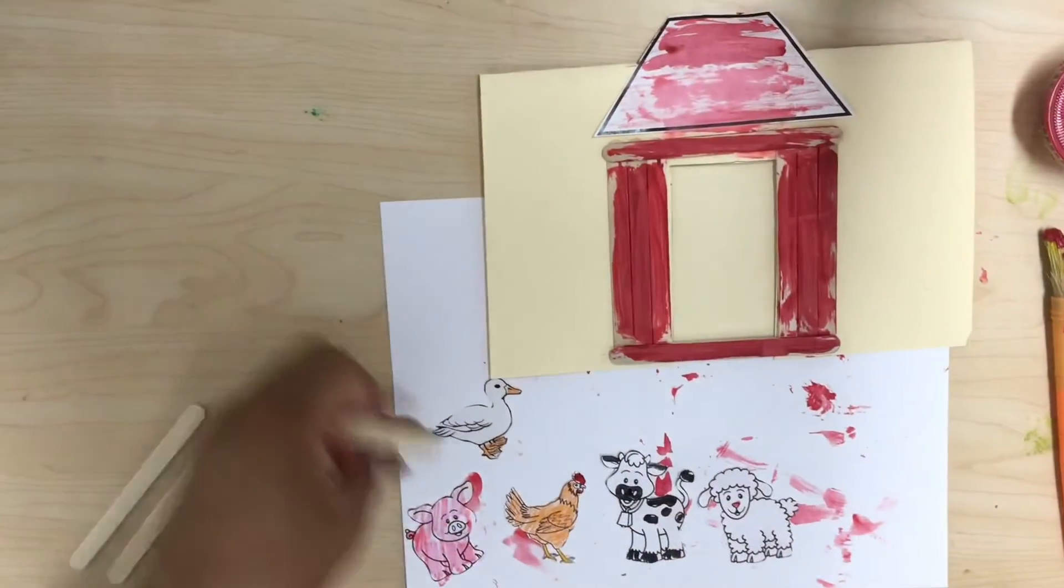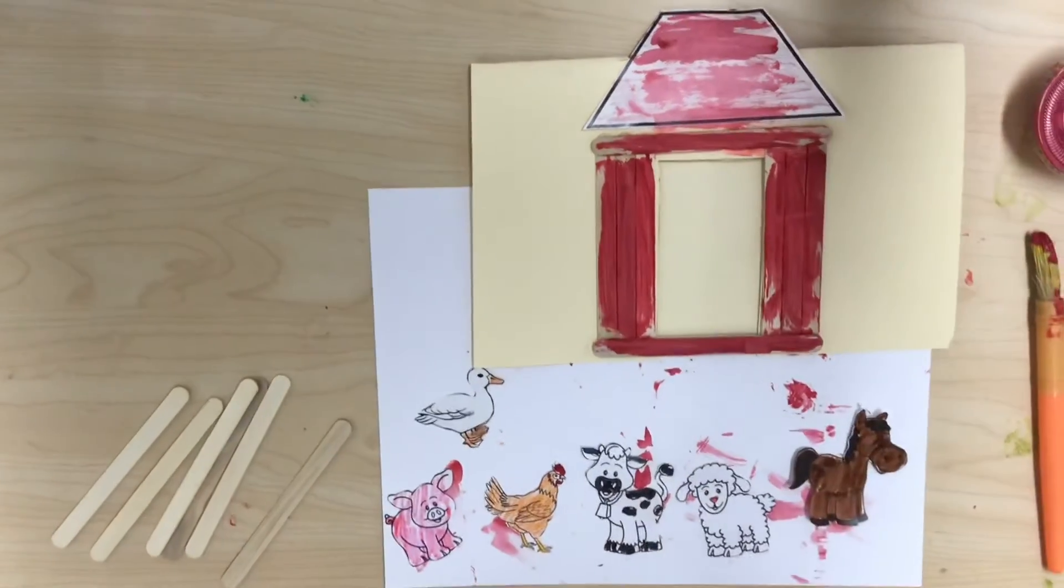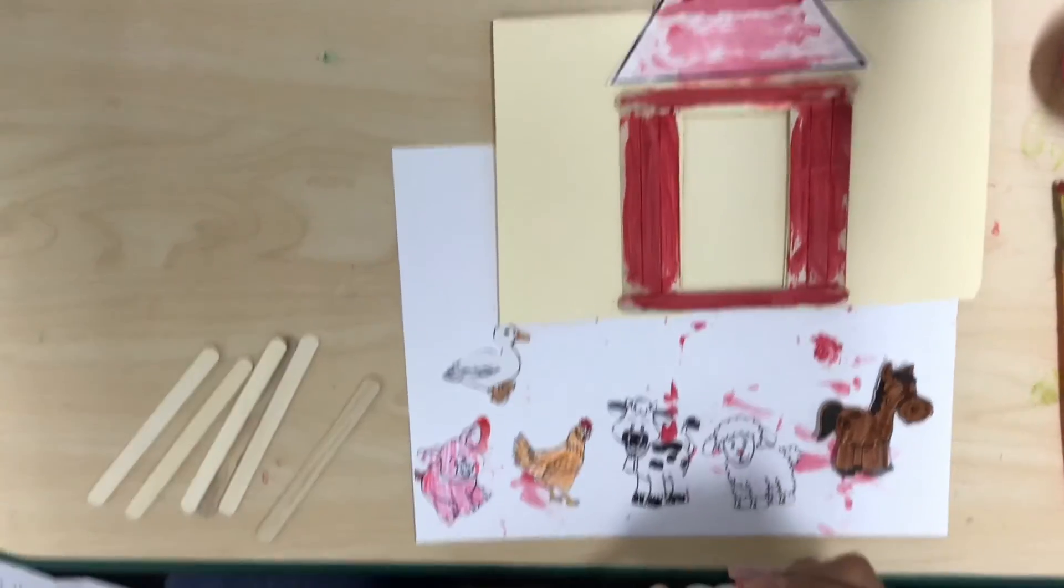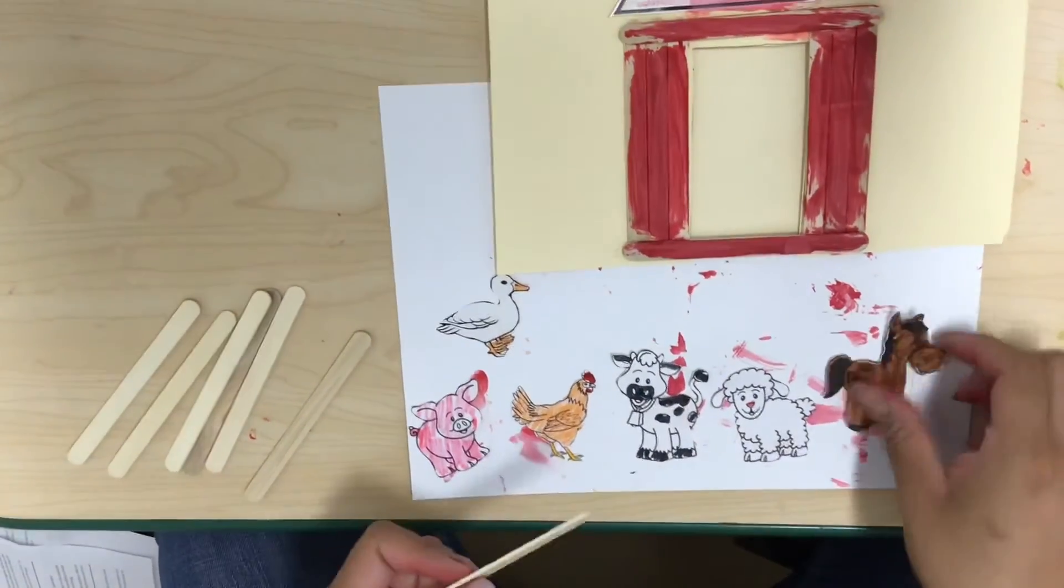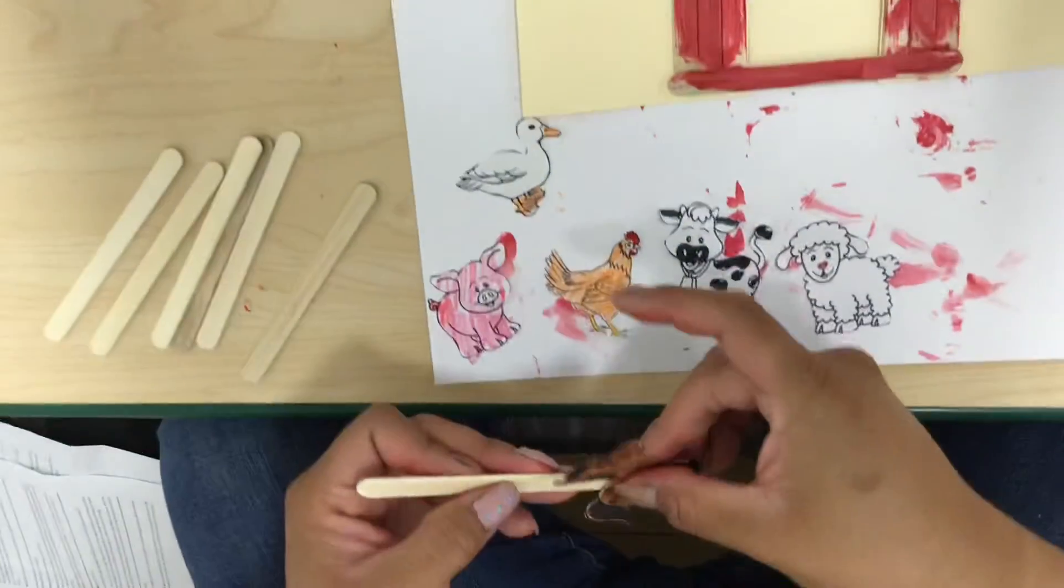Now that we have all our farm animals colored we're going to take some glue, add them to the end of our popsicle stick and add on our farm animal.